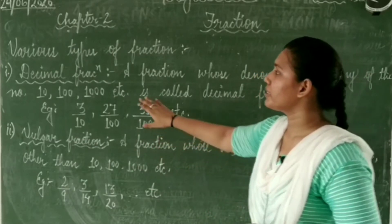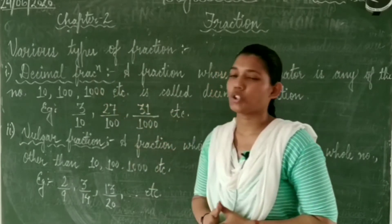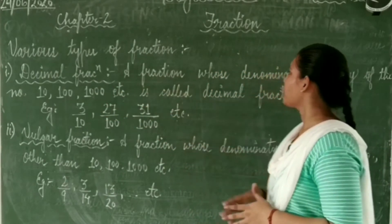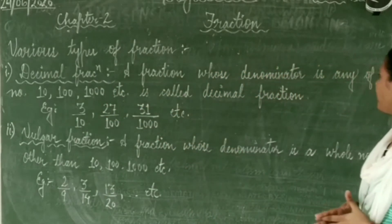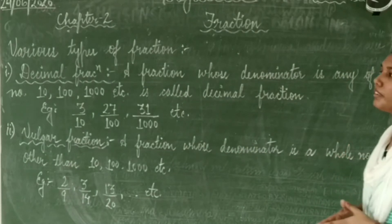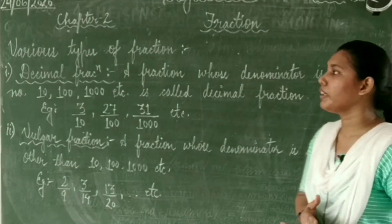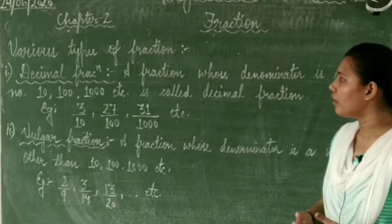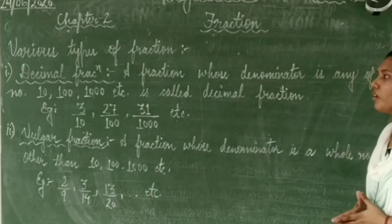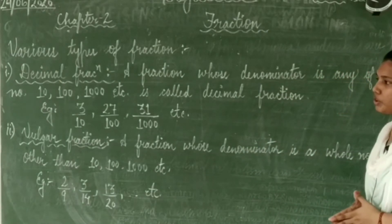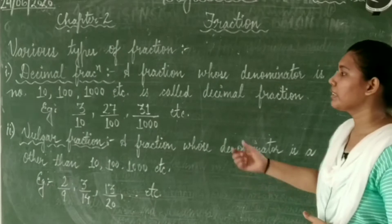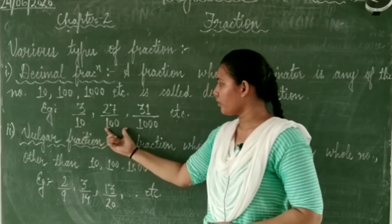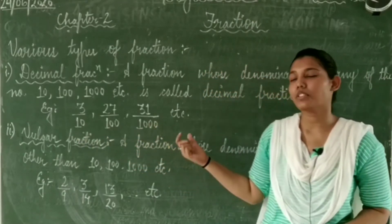The first type is the decimal fraction. A fraction whose denominator is any of the numbers 10, 100, 1000, and so on is called a decimal fraction. It means the denominator should be 10, 100, 1000, etc.